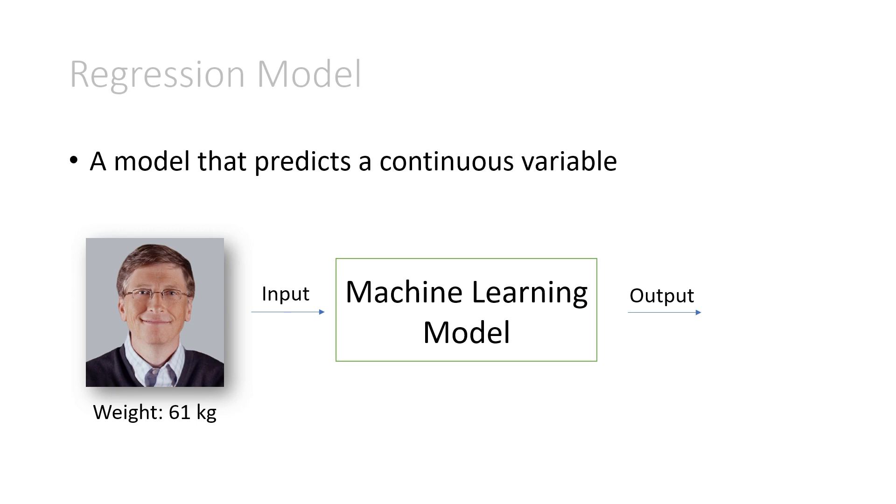And hopefully it's learned to map this to its output. And we are trying to predict in this example his height, which is 1.77 meters. This is called a regression model because the output is a continuous variable. Height is a continuous variable. Since this model is predicting it, we call it a regression model.